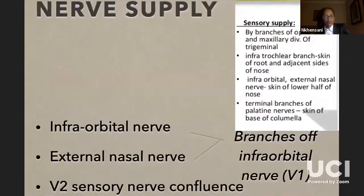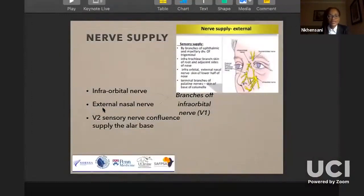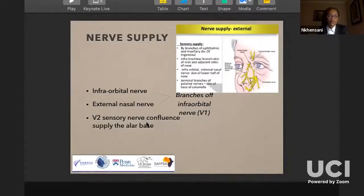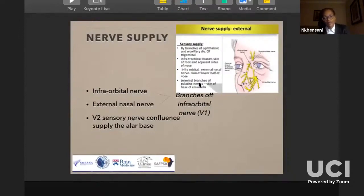The nerve supply is easy as well — three major nerves from the trigeminal nerve, nerve number five. The infraorbital nerve and the external nasal nerve are branches, so that's V1. And V2 also innervates the alar base. You have to study this especially when you want to block the face for live surgery — you need to know the areas where you need to block the sensory supply of the nose.